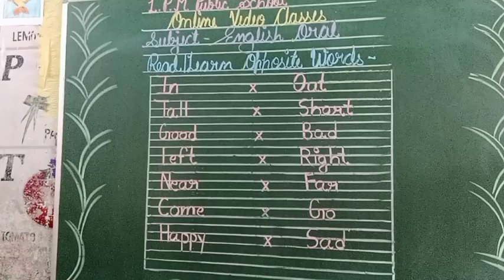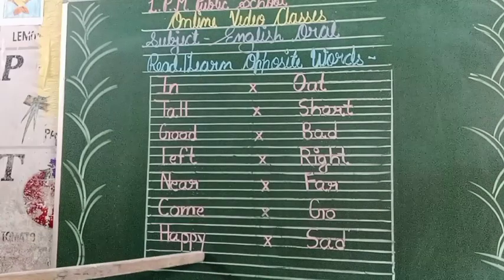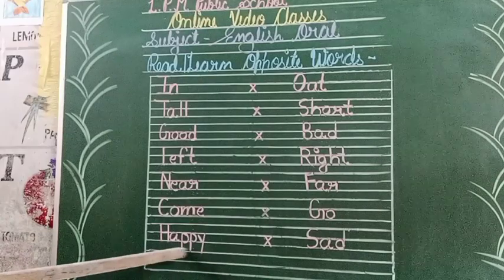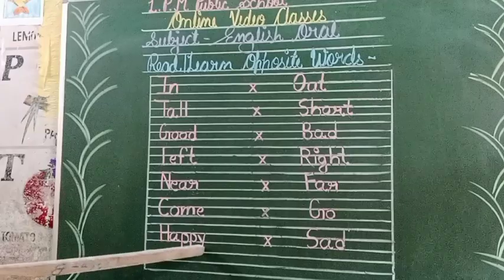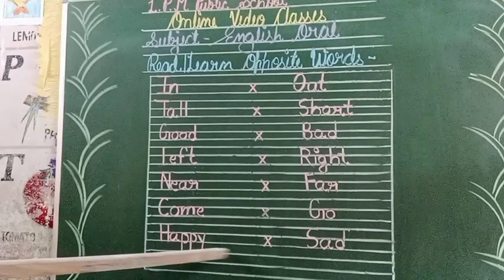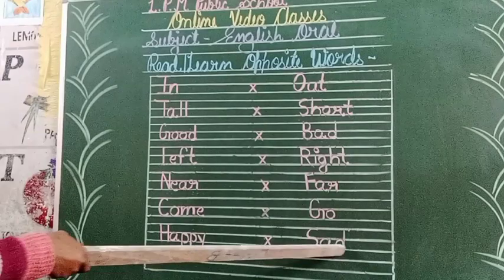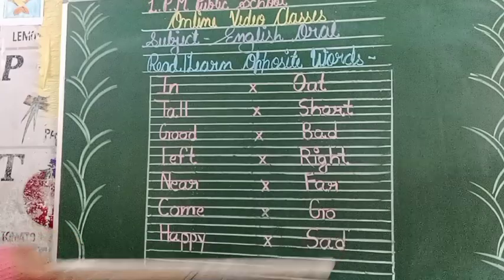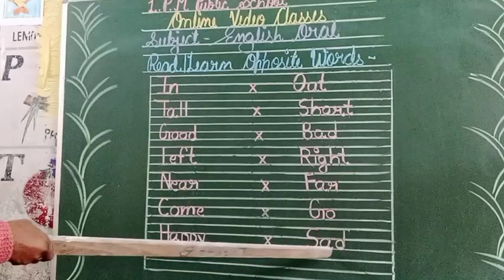Spelling of 'happy': H-A-P-P-Y, happy. H-A-P-P-Y, happy. Spelling of 'sad': S-A-D, sad. S-A-D, sad.